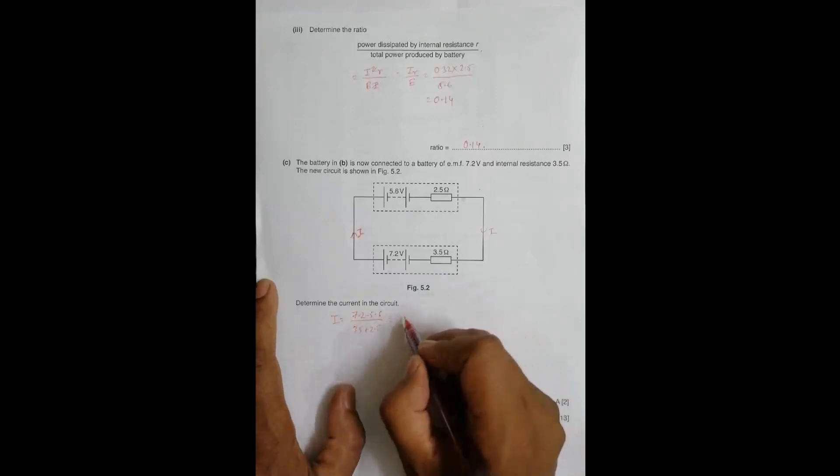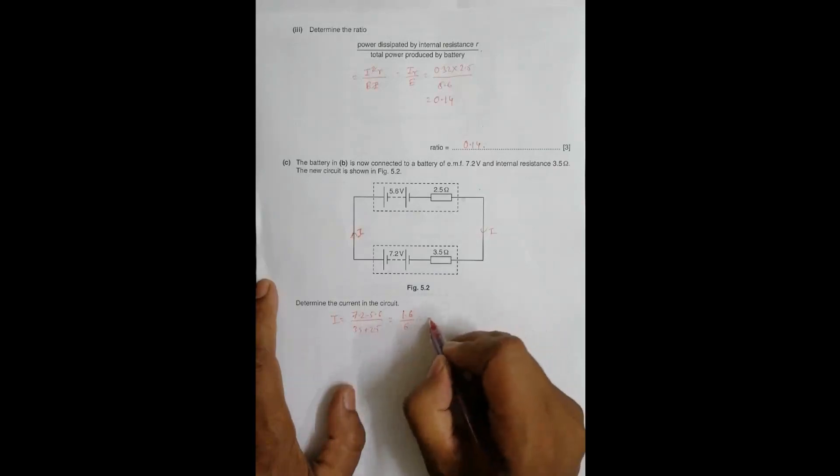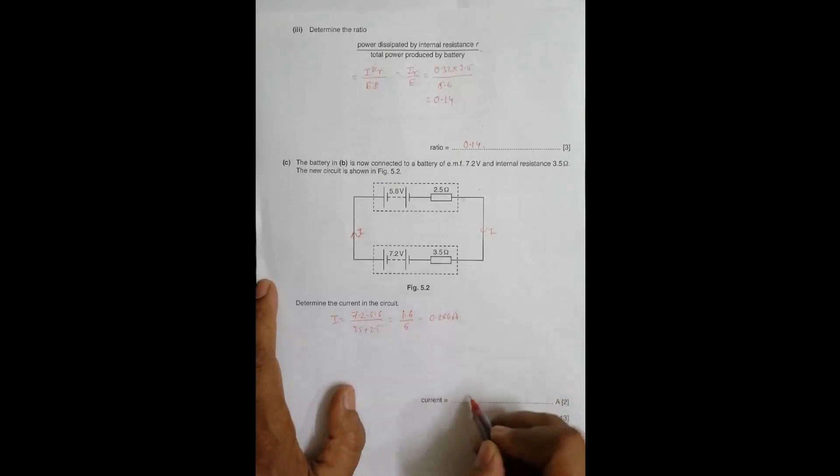So 1.6 divided by 6 becomes equal to 0.266 amperes. I can write this as 0.27 amperes. This is the current in this case.